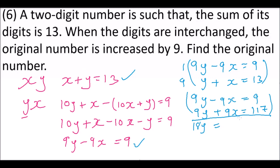This will give us 18y is equals to 9 plus 117, that should give us 126. Divide both sides by 18, and you get y is equals to 7. If y is equals to 7 and we are told that x plus y is equals to 13, so it means x is equals to 13 minus 7, which is 6.